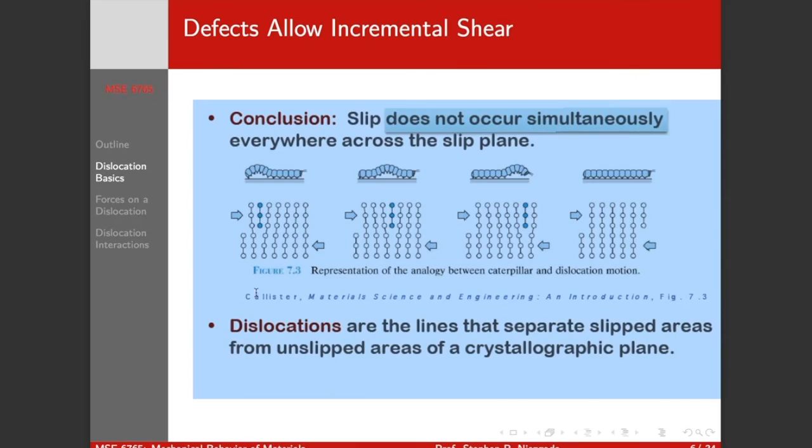Now here's the picture I took right out of Callister, this is probably the book you used in your introduction to material science undergrad. But the conclusion that was drawn is that slip does not occur simultaneously everywhere across the plane. Instead, we have these line defects in our crystal, we're going to call them dislocations, that facilitate shear by allowing a very limited number of bonds to be distorted at a time as they move across the crystal.